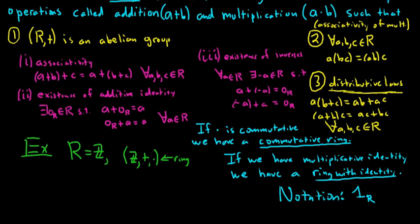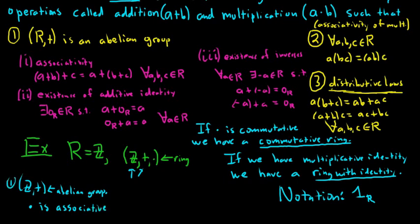Back to the integers example: the integers form an abelian group under addition, multiplication of integers is associative, and the distributive laws hold. Likewise, the rational numbers, the real numbers, and the complex numbers, each under regular addition and multiplication, are all rings.